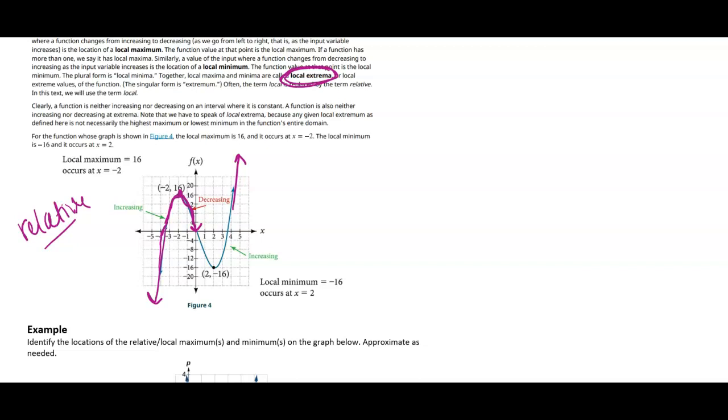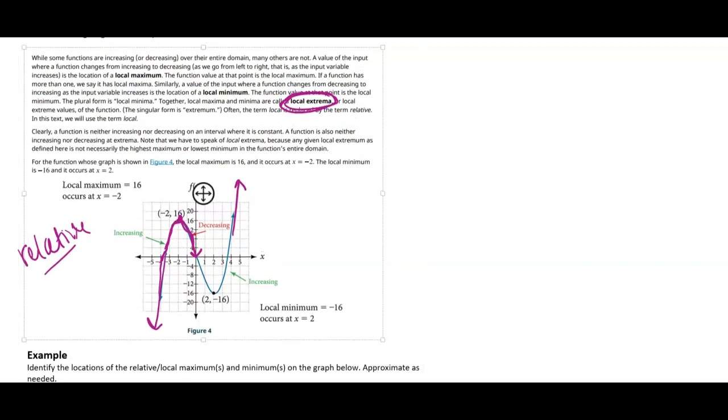A relative or local minimum is going to happen when the function changes from decreasing to increasing. So here we say that there is a local minimum of negative 16 and it occurs at x equals 2.